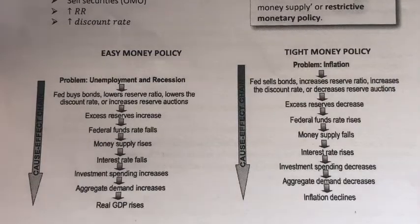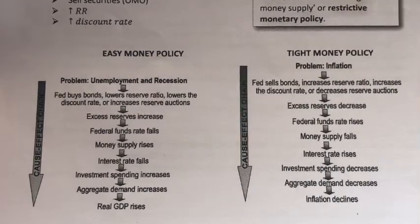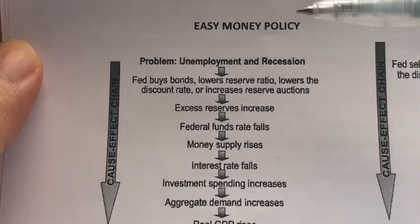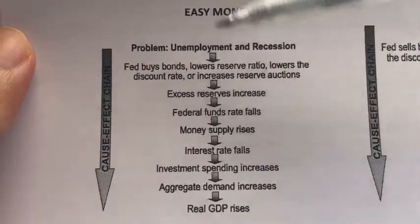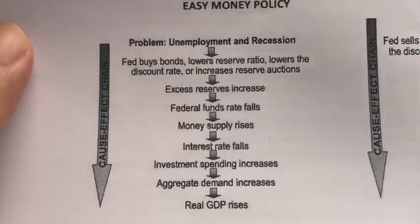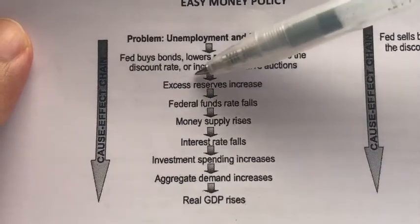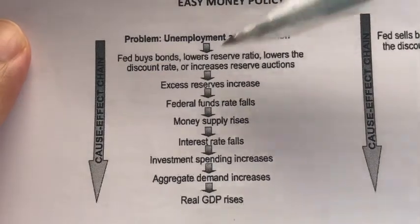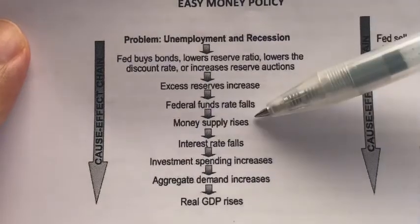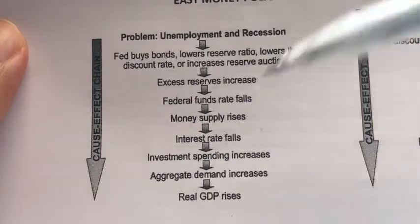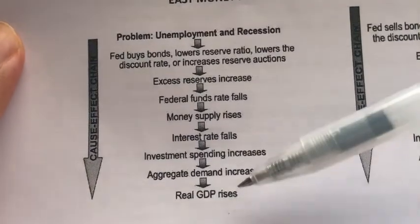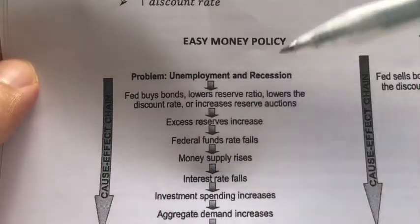Here's a summary. If the problem was recession, the government or central bank would adopt an easy money policy. The government would buy bonds in the open market, lower the reserve ratio, or lower the discount rate. These tools increase the amount of excess reserves in commercial banks, increasing their lending ability and therefore the money supply. When money supply increases, interest rate falls. When interest rate falls, investment spending increases, leading to an increase in aggregate demand and therefore real GDP rises — hopefully solving the high unemployment or recession problem.